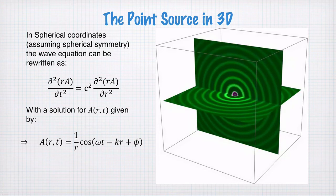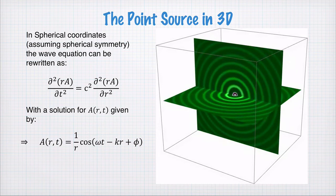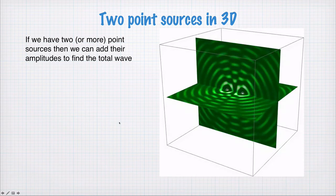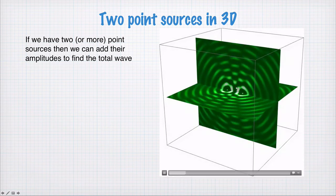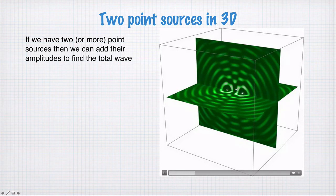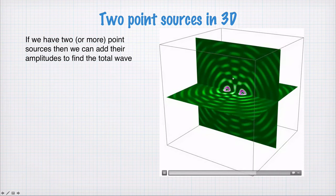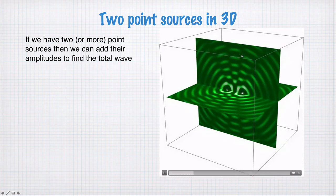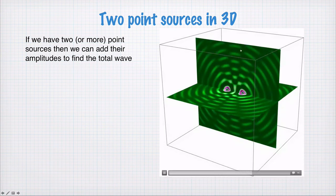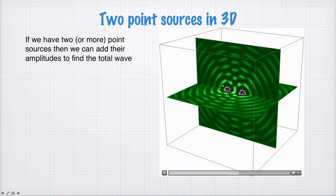What about interference between two point sources in three dimensions? We have two point sources next to each other, and we see that sometimes these waves overlap and interfere constructively. Along this line here, for example, we see waves propagating. But there are some directions — like along this direction here and this direction here — where the amplitudes of the waves, when they add up, interfere to give zero. So we have lines of destructive interference where we have zero amplitude, and lines of constructive interference where we have some amplitude.